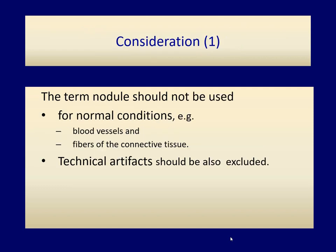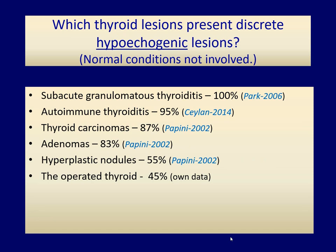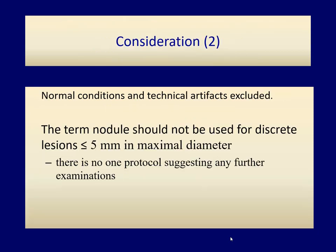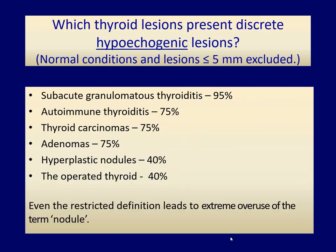We can make two considerations. First, we should exclude normal conditions from the nodule category. Eco-abnormalities caused by technical artifacts should also be excluded. This table lists in decreasing order thyroid diseases presenting hypoechoic lesions, without normal conditions. The two leading diseases are not pathological nodules but various forms of thyroiditis. Thyroid cancer only comes after the two forms of thyroiditis in order of frequency. Another consideration: it is worth excluding from the nodule category lesions less than 5 mm in maximal diameter, as no protocol suggests further examination in such cases. The situation improves somewhat but essentially remains unchanged — even the definition in restricted terms is practically useless.